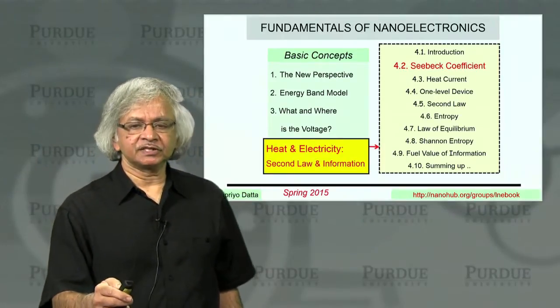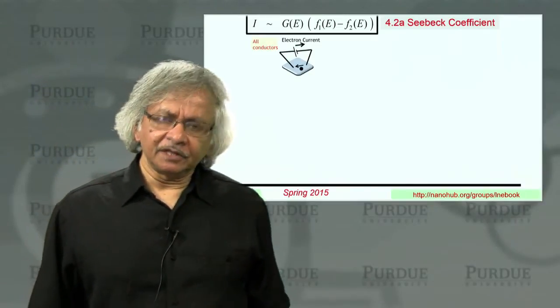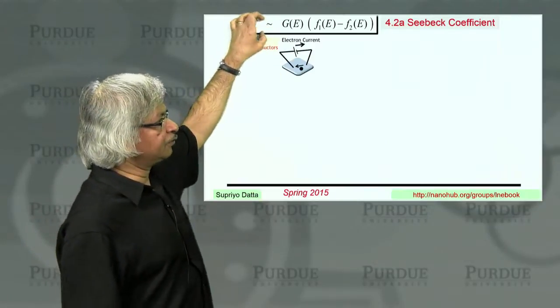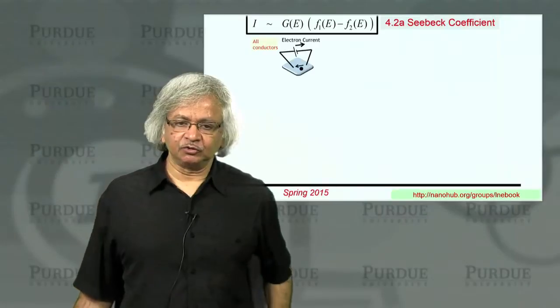So we start with this Seebeck effect. As you know, so far we have been talking about current flow. In our model, the current flow is proportional to F1 minus F2, the Fermi functions in the two contacts.